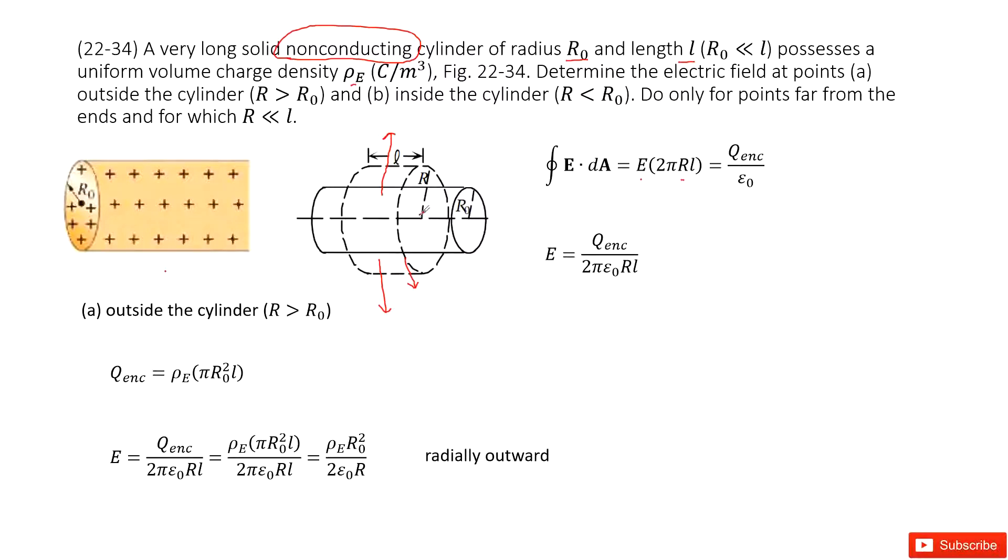So in this case, we just consider the surface. This is radially out, so it's 2πRL. Now we can write the equation for electric field as enclosed charge divided by 2π epsilon 0 RL.